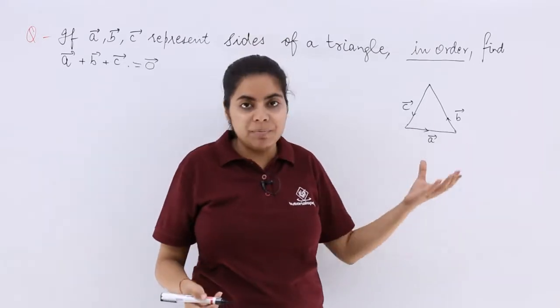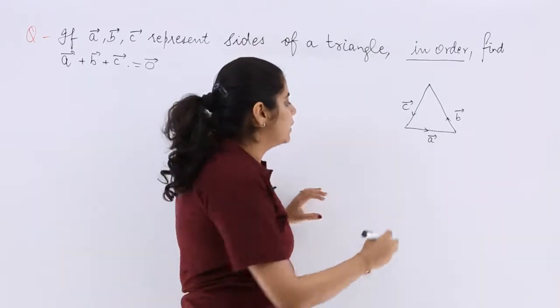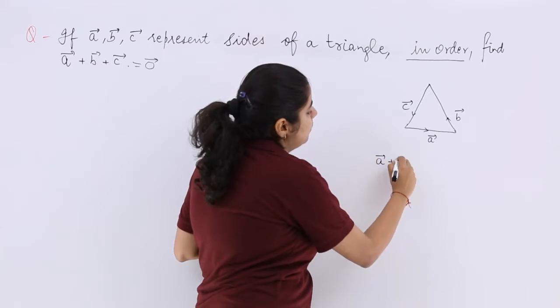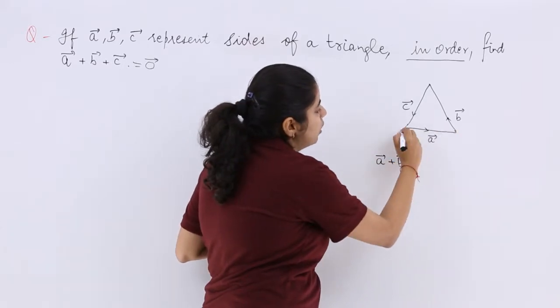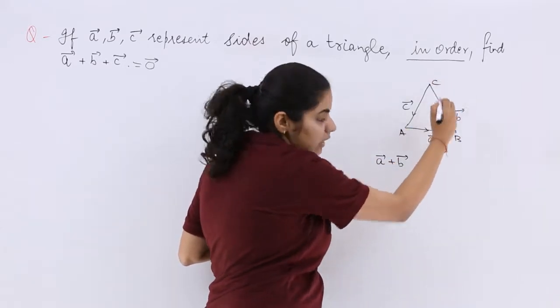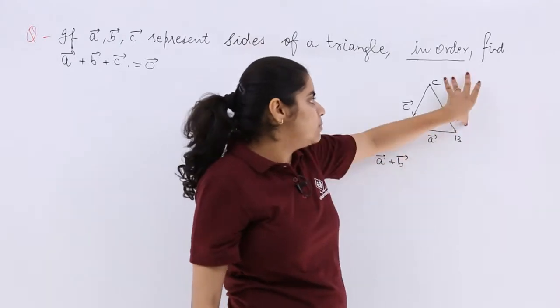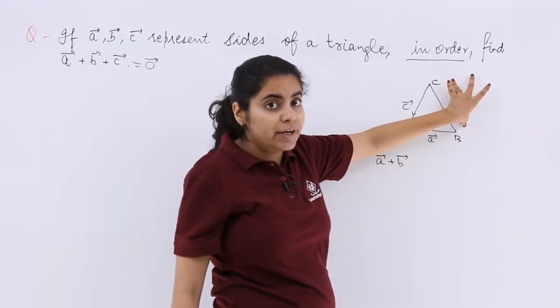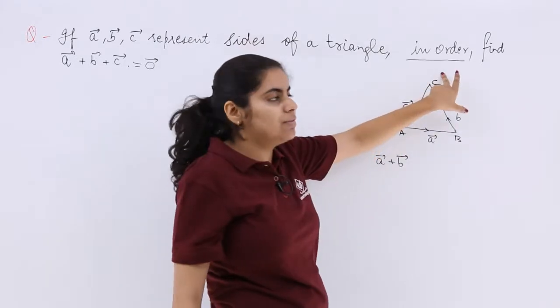But if you do not want to remember through the loop thing, you know that A vector plus B vector, if I am going to talk about A, B, C, if AB vector plus BC vector is there, according to triangle law of vector addition, the answer should be AC vector.